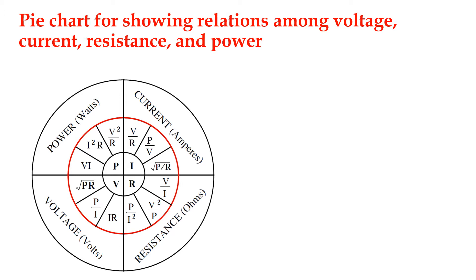First of all, let's take power. So what is power? Power is equal to V into I. And from Ohm's law, V is equal to IR — at constant temperature, voltage is directly proportional to resistance.